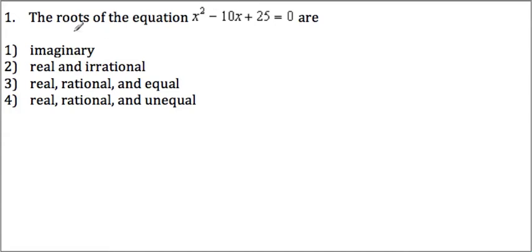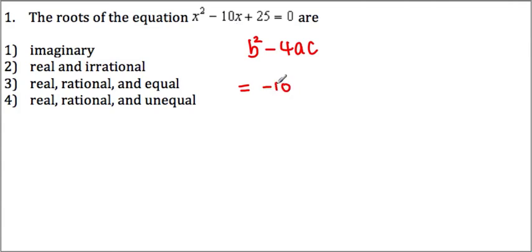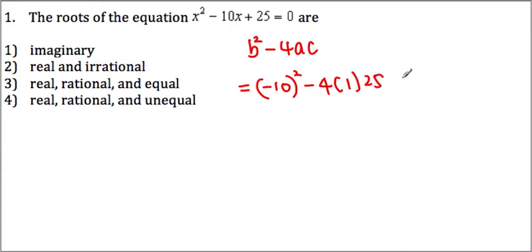First one — the root of the equation. As soon as you see words like imaginary or real, you can think of the discriminant, which is b squared minus 4ac. Let's see what we get: b is equal to negative 10, so negative 10 squared minus 4, a is 1 (the coefficient of x squared), c is equal to 25. Once you calculate this, negative 10 squared becomes 100 minus 100, which is equal to 0.